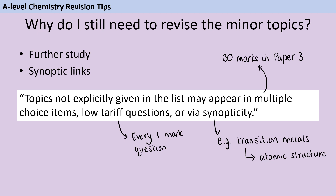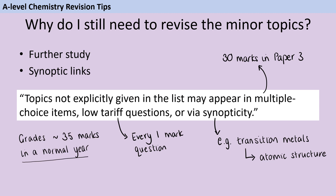Even though we teach chemistry as lots of discrete units, there is lots of overlap between them. For instance, you could have a question which is ostensibly about the transition metals, but then it mentions a tiny bit about atomic structure and suddenly you're having to do electron configuration or think about a first ionization energy. It's worth bearing in mind that in a normal year the gap between two grades is about 35 marks, so even just the multiple choice questions alone could almost be the difference between an A grade and a C grade.